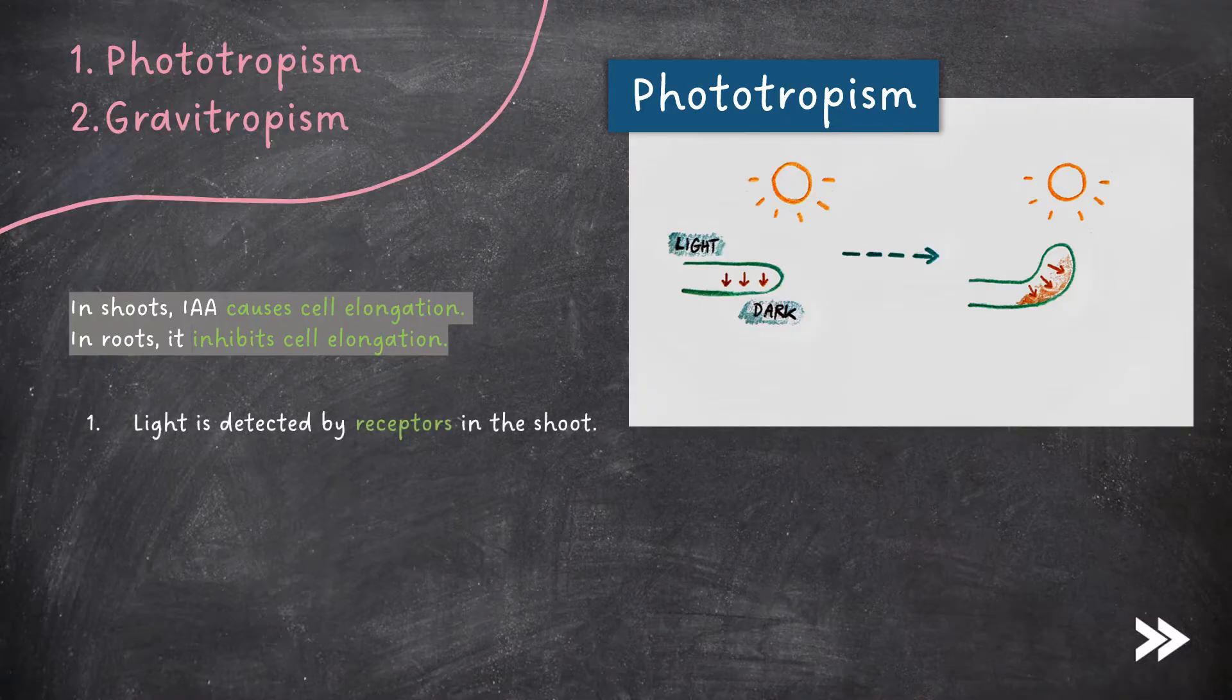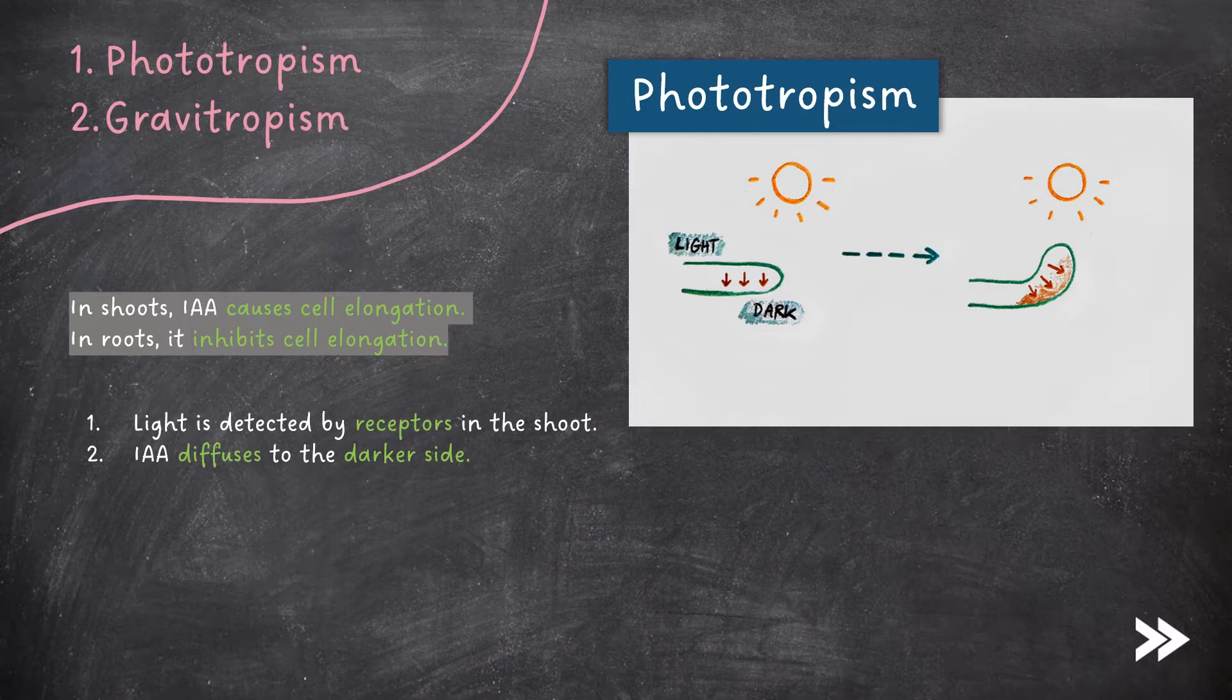First of all, light is detected by receptors in the shoot. IAA then diffuses to the darker side. Note that it is very important to mention that IAA diffuses. Mark schemes very often will allow only answers which include the word diffuses, nothing else, and in mark schemes, this word is often underlined to emphasise this to examiners.